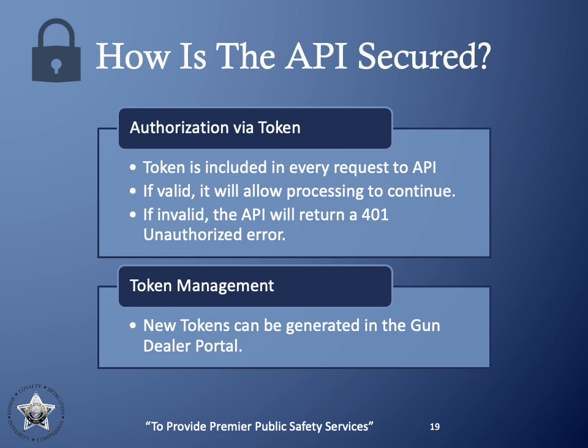Requests to the API are secured with the API token that is associated with a dealer. It is included with every request to the API in the authorization header. A request will only be processed if the token is valid; an invalid token will return a response indicating the request was unauthorized. The API token is managed via the gun dealer portal, which also allows you to generate new tokens if needed.